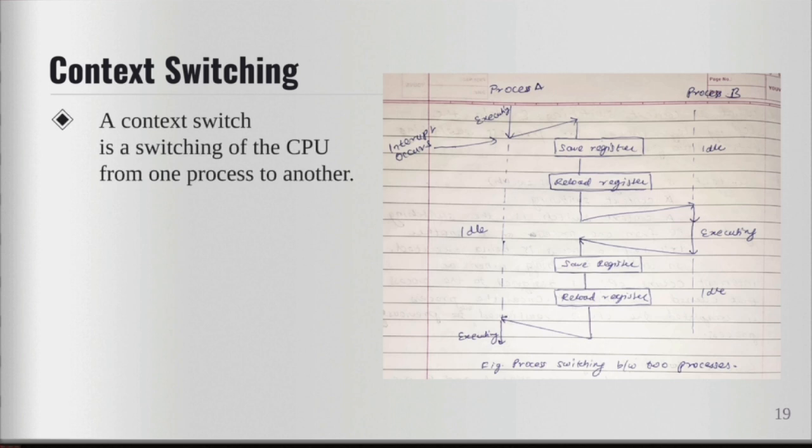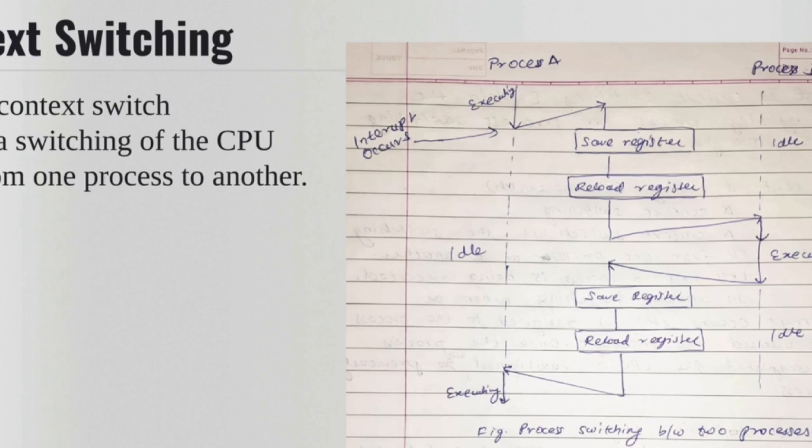Context switching is basically the switching of the CPU from one process to another process. Let's say there's a process that is being executed. So in context switching when an interrupt occurs, the CPU is assigned to the process that caused the interrupt and once the process is completed the CPU is reassigned back to the previous process. So let me give you an example.